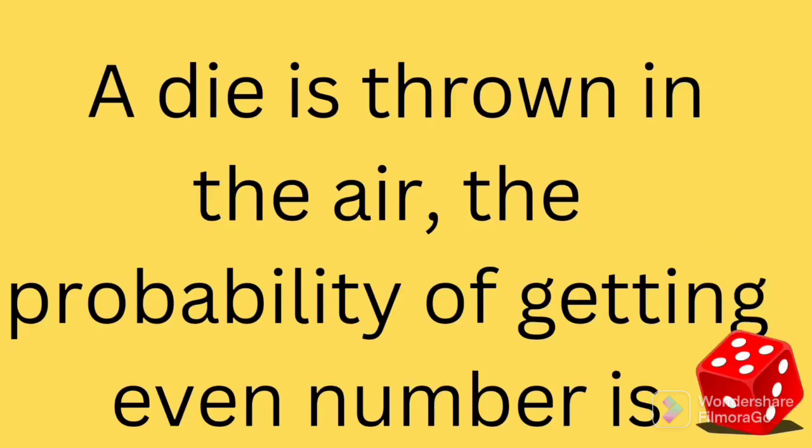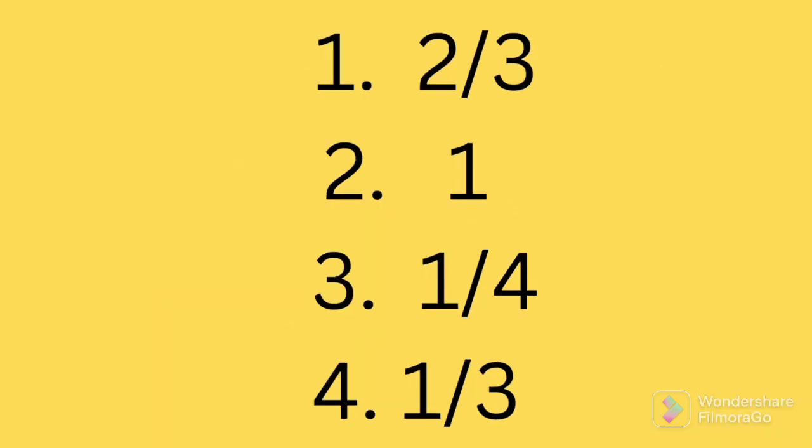A die is thrown in the air. The probability of getting even number is—The options are 2 by 3, 1, 1 by 4 or 1 by 3.